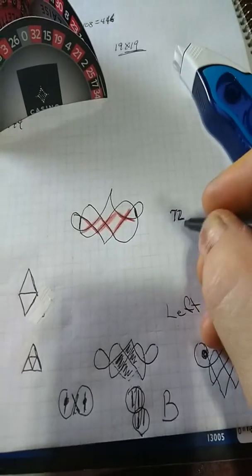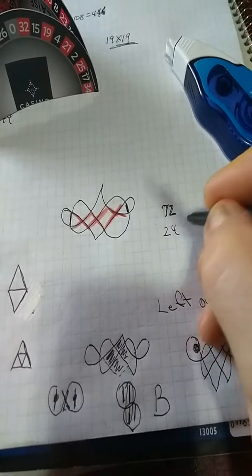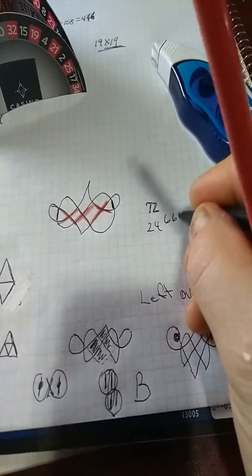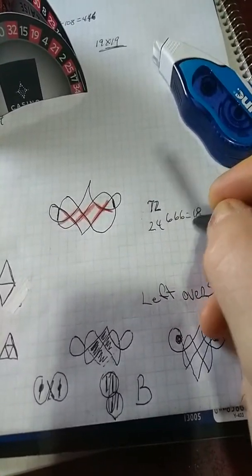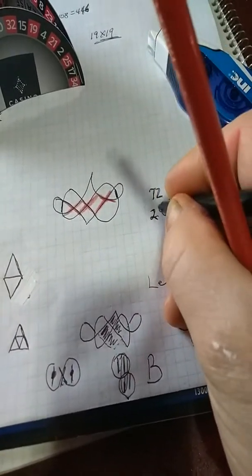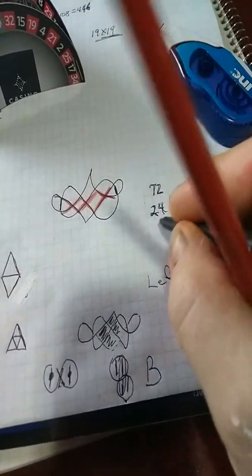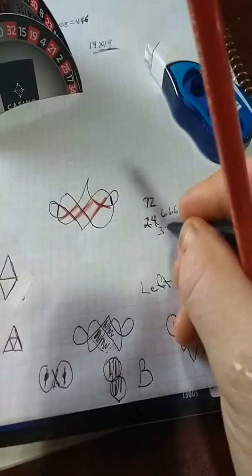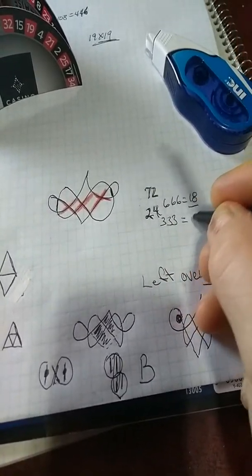18. The reverse of X is three, so we'd have three, three, three, equals to nine.